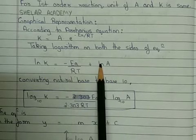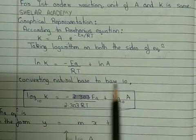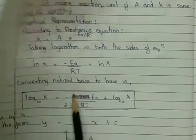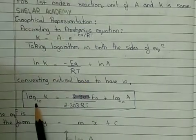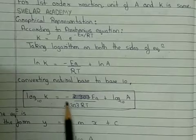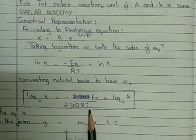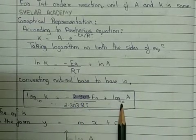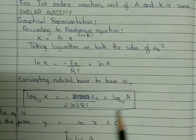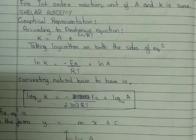That is our natural base form. If we convert from natural base to base 10, the equation can be rewritten as: log₁₀ K equals minus Ea upon 2.303RT plus log₁₀ A. This is another form of the Arrhenius equation.